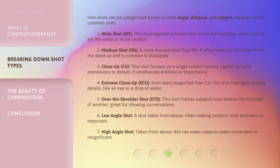Film shots can be categorized based on their angle, distance, and subject. Here are some common ones. 1. Wide Shot (WS): This shot captures a broad view of the surroundings, often used to set the scene or show location. 2. Medium Shot (MS): A more focused shot than WS, it often features characters from the waist up and is common in dialogues. 3. Close Up (CU): This shot focuses on a single subject closely, capturing facial expressions or details. It emphasizes emotion or importance.